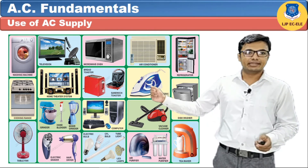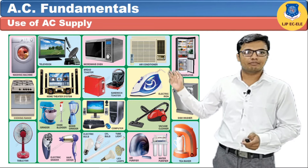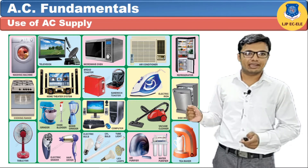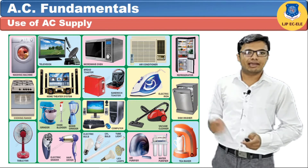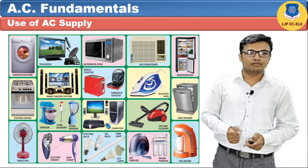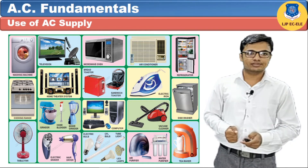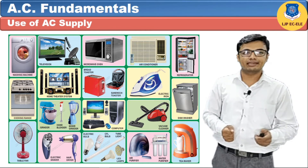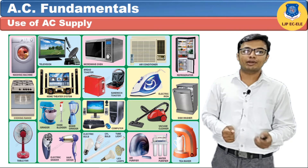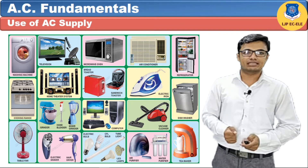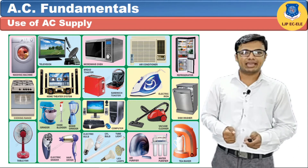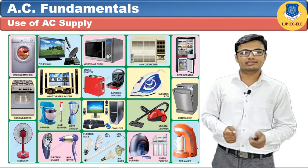Here you can see various heating devices like electric toaster, bread toaster, filament lamp, electric iron, etc., which operate on the RMS value of alternating current. So we also supply AC to heating devices. Ultimately we can say that 90% of devices require AC supply, which is why we use AC supply in domestic or industrial settings.